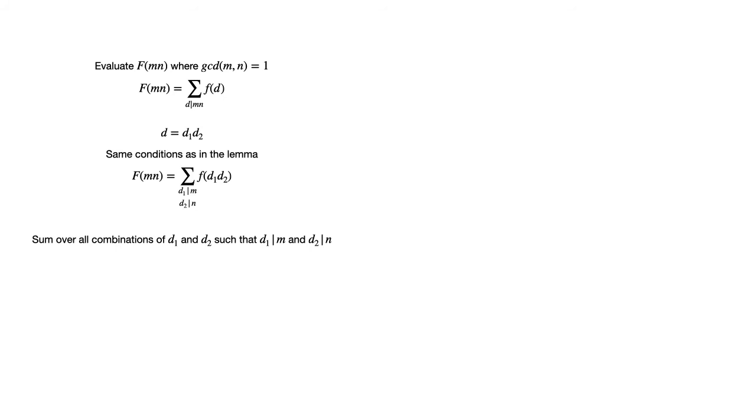So F of mn equals the sum of little f of d₁d₂ as d₁ divides m and d₂ divides n where we sum over all combinations of d₁ and d₂. By the multiplicative nature of f, we can write the sum of little f of d₁d₂ as d₁ divides m and d₂ divides n equals the sum of little f of d₁ multiplied by little f of d₂ over the same conditions.